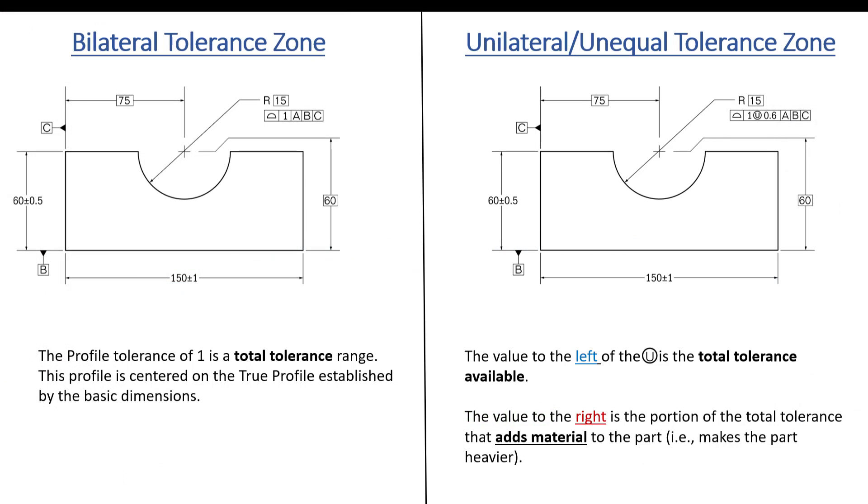I have added a sample drawing here for bilateral tolerance zone and another one for unilateral unequal tolerance zone. They are really the same examples. The only thing that I've done is I have changed the two callouts here. So on the left you see we just have a regular profile callout, and on the right here we've added in the U symbol and the tolerance for unilateral. That's what we're talking about here, that's the difference between the two.